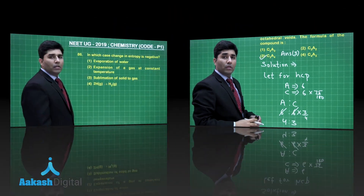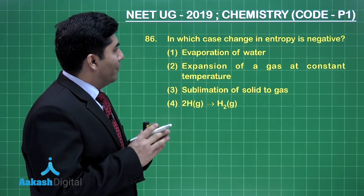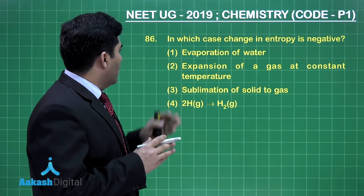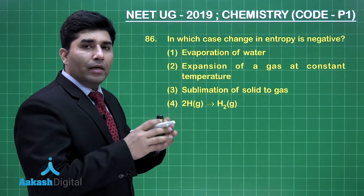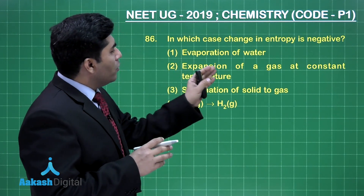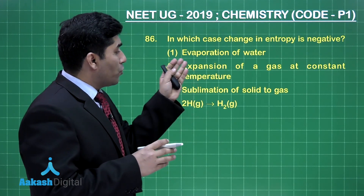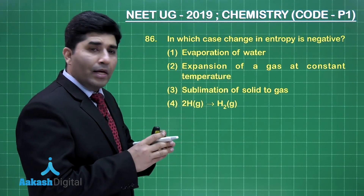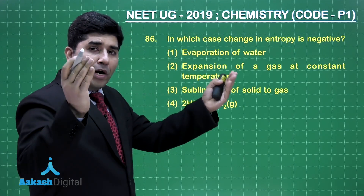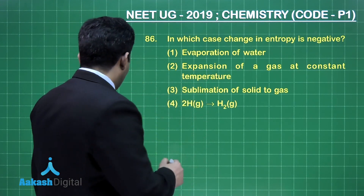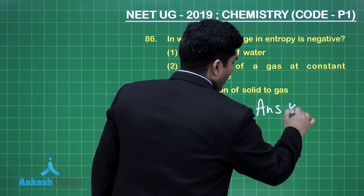Moving on to the next question: in which case is the change in entropy negative, meaning entropy is decreasing? First option, evaporation of water — water is a liquid becoming gas, so entropy will increase. Second, expansion of a gas at constant temperature — entropy will increase. Third, sublimation of solid to gas — entropy will increase. And the last one: two hydrogen atoms becoming one hydrogen molecule. The randomness will decrease in this case, so the answer is option 4.